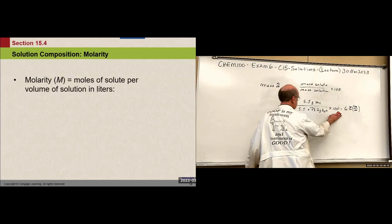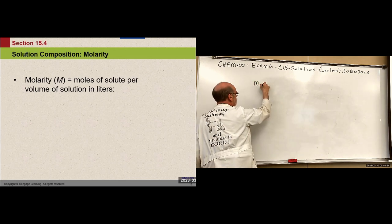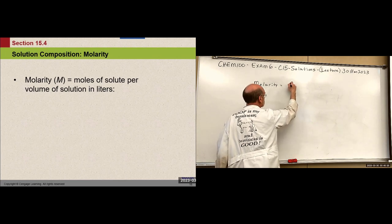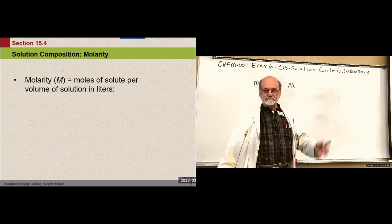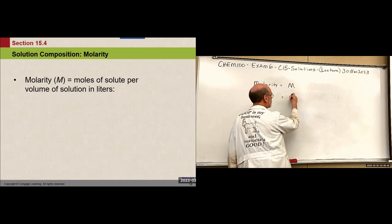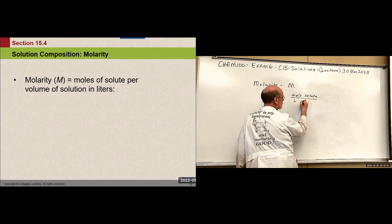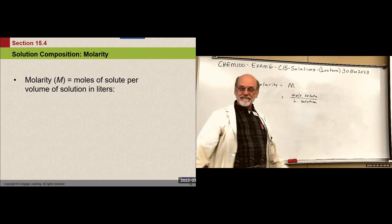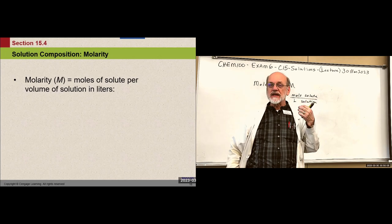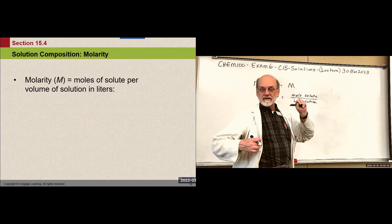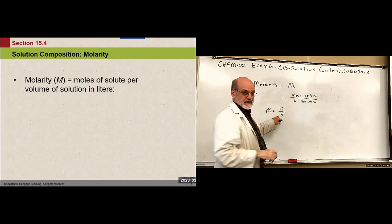A more commonly used unit for solutions is called molarity, equal to a capital M. A number in front of that M means 'x molar.' It's calculated by moles of solute per liter of solution. If you know the value of molarity and you pull out, say, 100 milliliters of the solution, you can calculate exactly how many moles of solute are in that solution. Molarity equals moles per volume, and the volume has to be in liters.